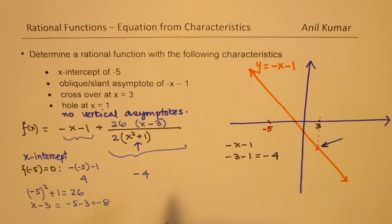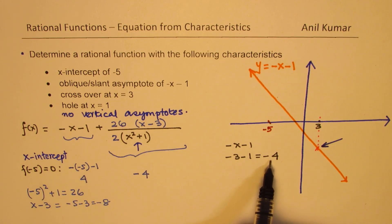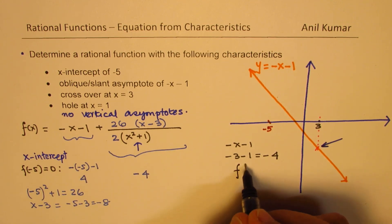is minus 4. So that means my function should have a value of minus 4 at f of 3.